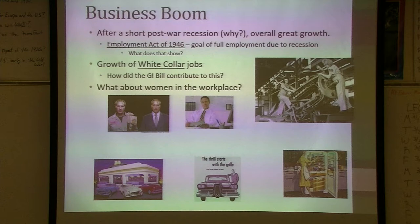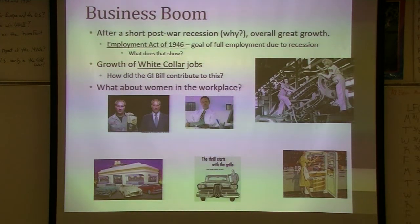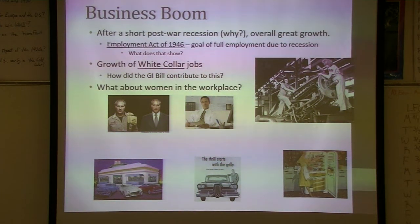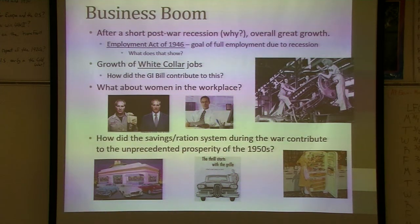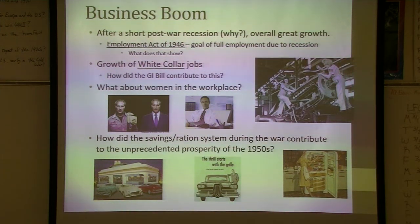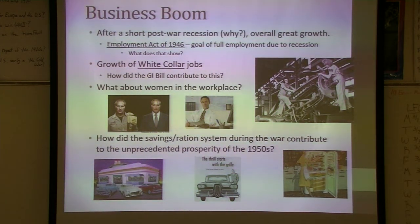What about Rosie the Riveter? What happened to her? Rosie was told to go back to the home, or if they were working, it was more pink collar jobs like being a secretary or telephone operator, and they were not getting paid as much. Because of the ration system and people saving so much and buying war bonds during the war, that money was saved up. The war bonds were going to mature during the 50s, so people had a lot of extra money — one of the many factors that helped make the economy so big.